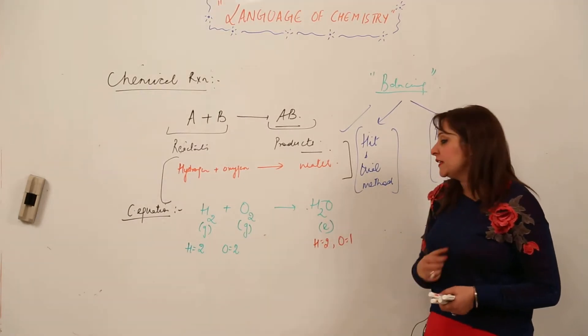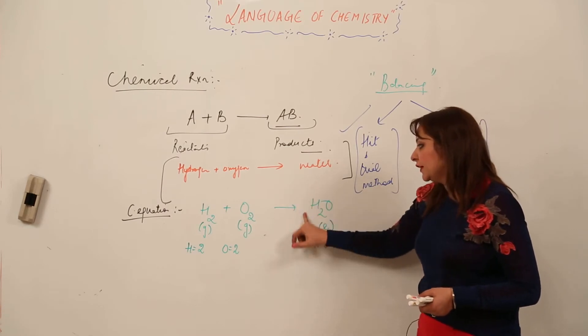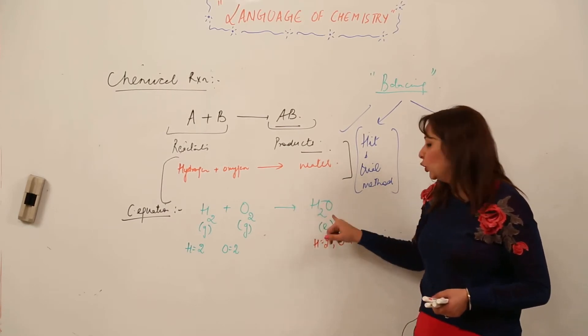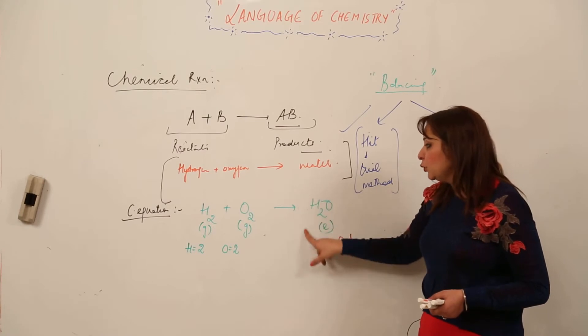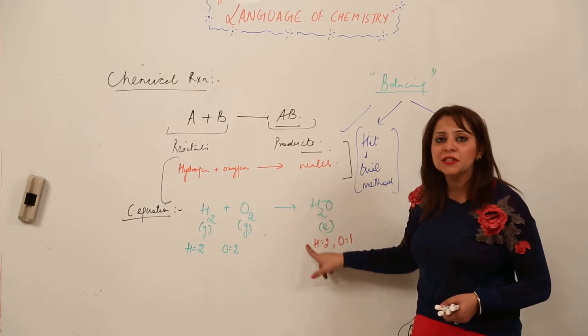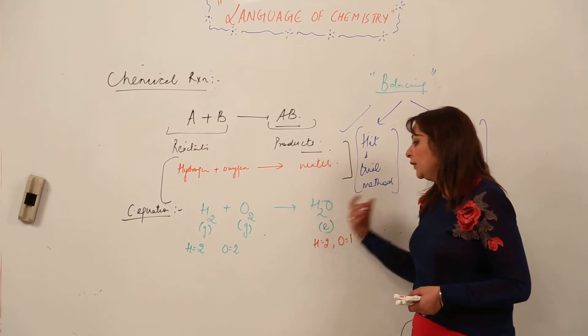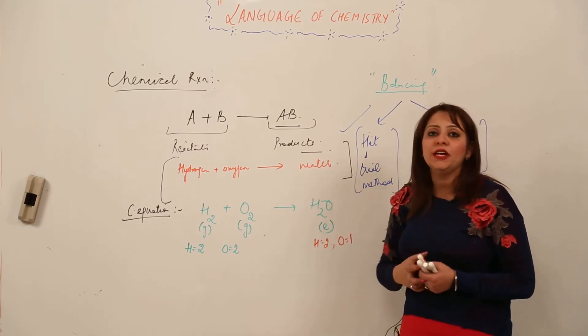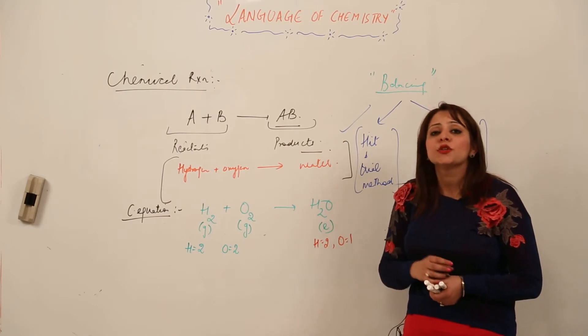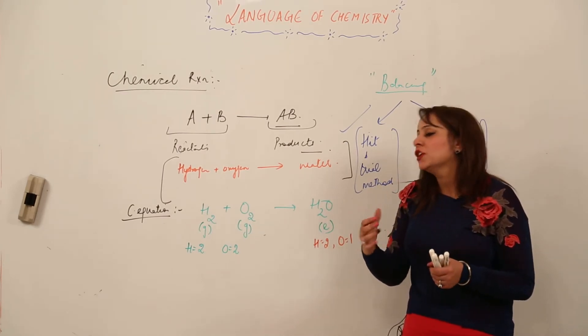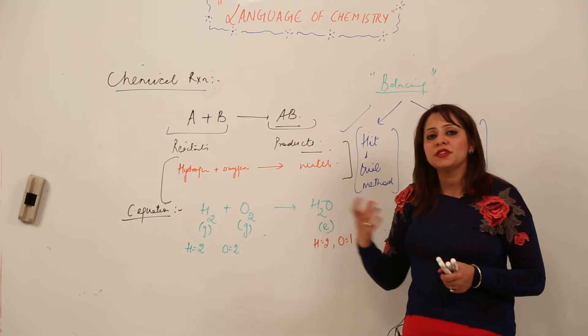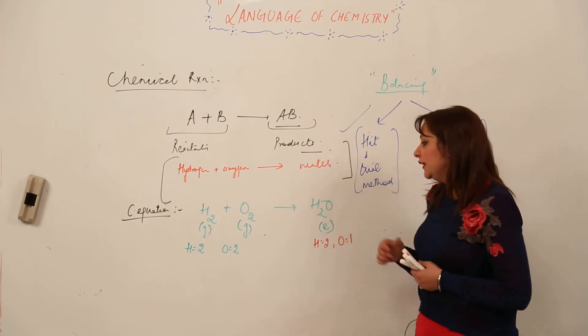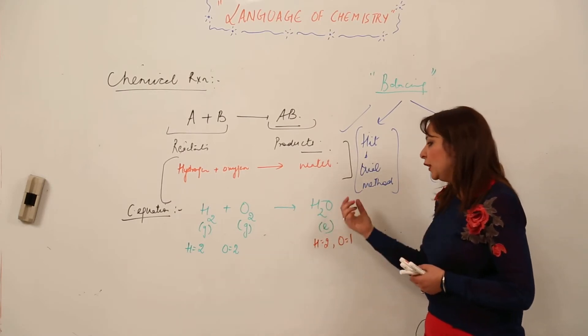There are 2 oxygen atoms on the left side and only 1 oxygen atom on the right side. For balancing, we can put any number on the right side, not in the middle or left side. We can make it 2 by prefixing 2 in front of H2O.